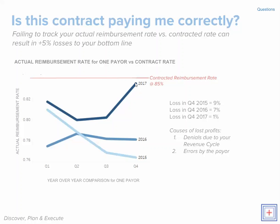When you think through what causes these losses, there are either denials due to your internal processes or there are errors by the payer. First you want to understand that there's a gap, then you want to understand what's causing the gap, and then finally you want to address the gap.